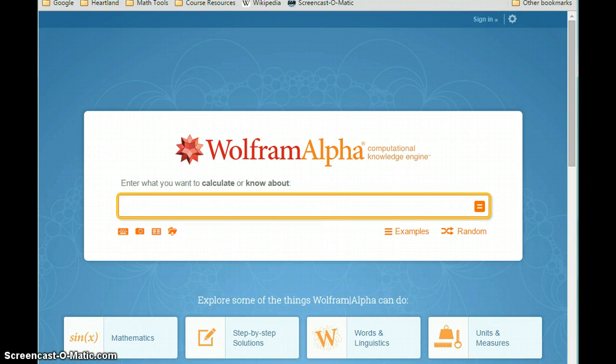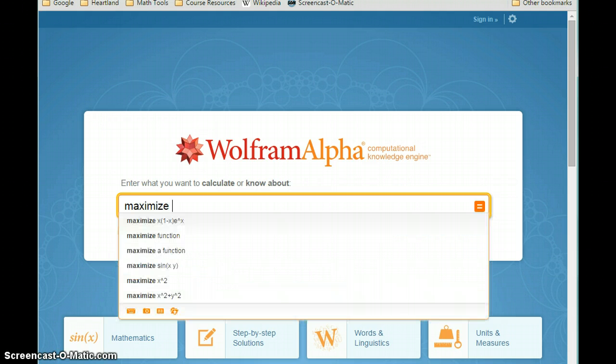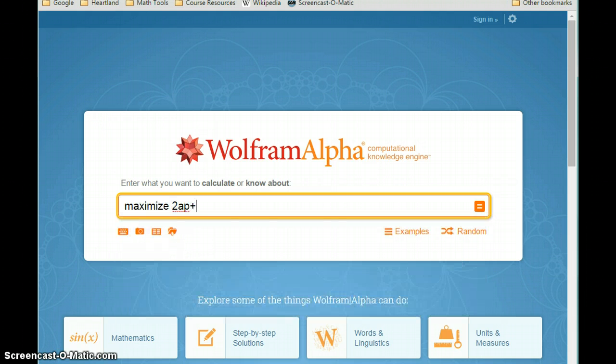So what we want to do for this problem is maximize this given function 2AP plus 240P minus 25P squared minus 1 tenth A squared P minus 80 for A and P. So we're plugging in that function, and then we're telling WolframAlpha what those two independent variables are.